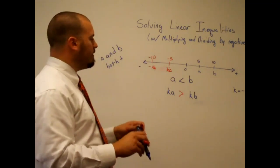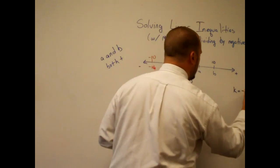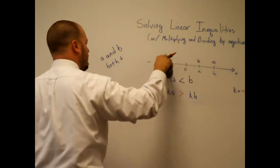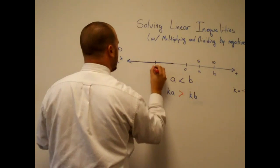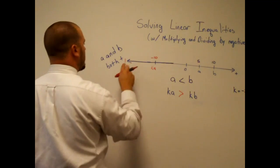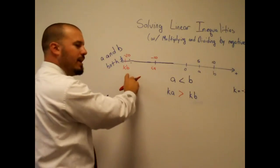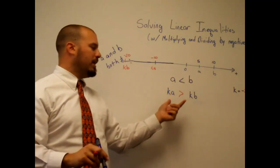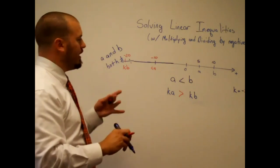That was just a specific example, but this will hold true no matter what our K value is — no matter what our negative number is. If we quickly change K to negative 2, KA would be negative 10, and KB would be negative 20. KB is even further out to the left, so KA is still larger than KB. Again, you have to flip the inequality.